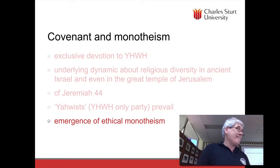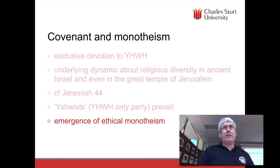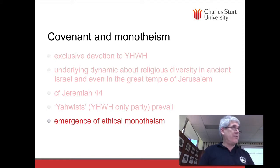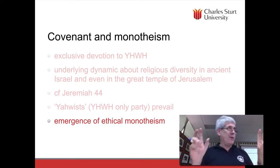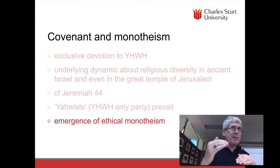The Queen of Heaven — the lady with the big breasts, the fertility goddess all through the ancient Near East. Her statues — Ashtar was her name — have been found all through ancient Israelite archaeology sites. So we know what they had in their bedrooms, and they weren't statues of Yahweh. The people in ancient Israel were not monotheists; the people writing the books were, but the people in the pews were not.